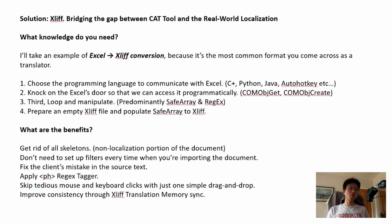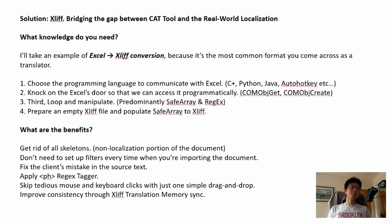Next, you first need to knock on the access door — not the UI that's been presented to you, but the back door to see the access code itself. In my case I'll be using COM Object — either COM Object Get or COM Object Create. Sometimes Get is better, sometimes Create is better, so I'll use them accordingly. Third, Loop and Manipulation, which are done predominantly by SafeArray and RegEx.